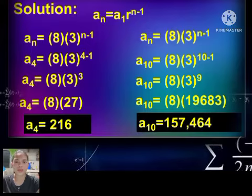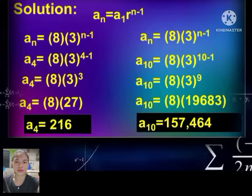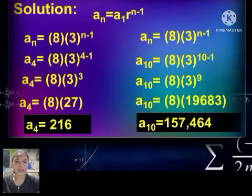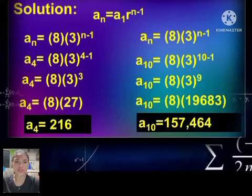Step 3: Find the tenth term in the same way as the fourth term. Using the formula a sub n equals a sub 1 multiplied by r raised to n minus 1, a sub 10 equals 8 multiplied by 3 raised to 9, which is 8 multiplied by 19,683. Therefore, a sub 10 equals 157,464.